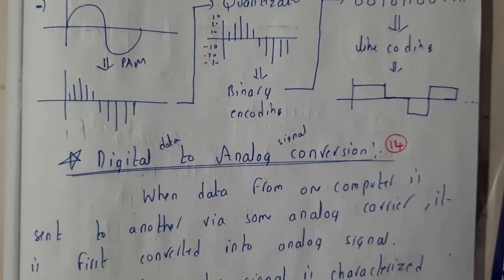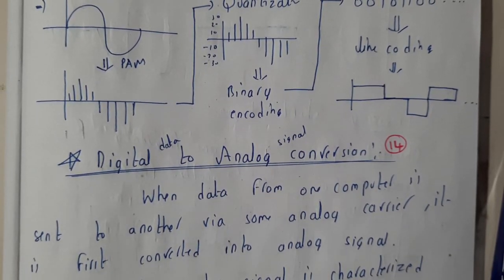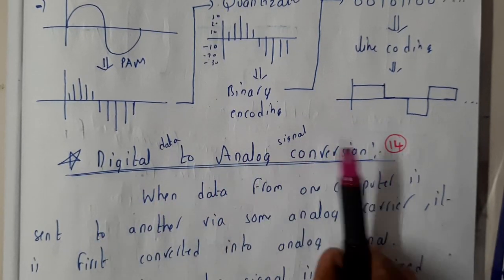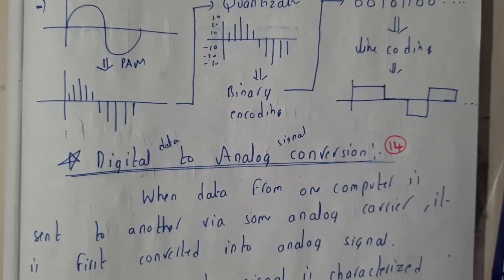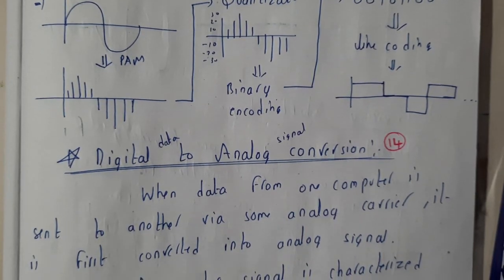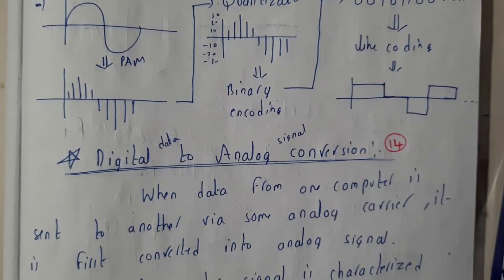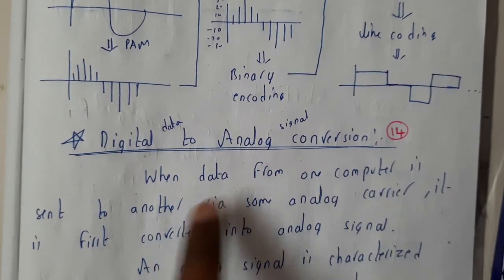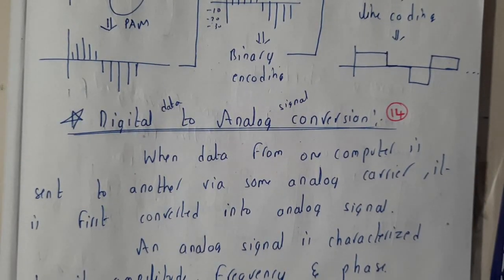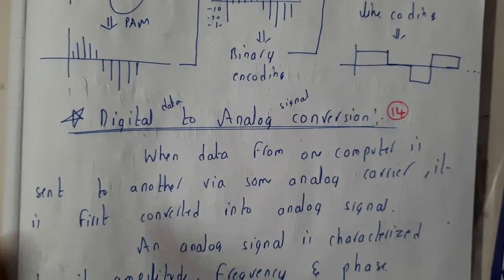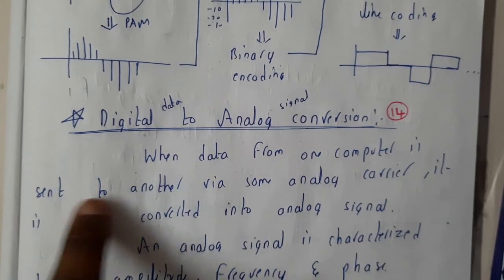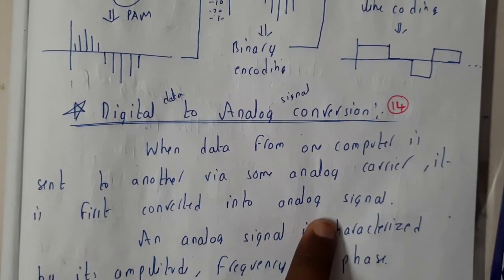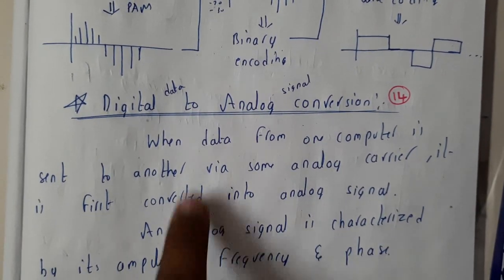Hello guys, we are back with our next tutorial. In this tutorial let us go through digital data to analog signal. These next two topics are not entirely clear to me, so I have just returned to the steps. The first topic is digital data to analog signal conversion — when data from one computer is sent to another via some analog carrier or analog cable, it is first converted into an analog signal.